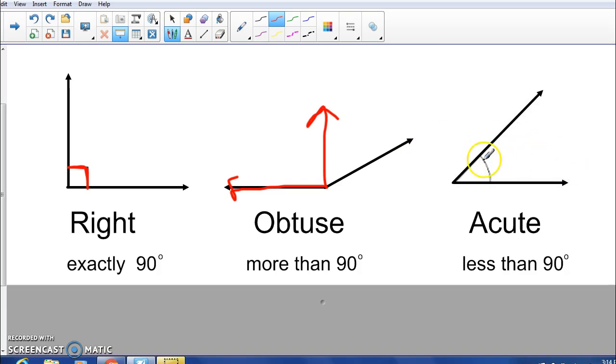Acute angles, cute little angles, are smaller than 90 degrees. So if I put 90 degrees in again, a right angle, you can tell this angle fits right inside. That's how you know it's acute.